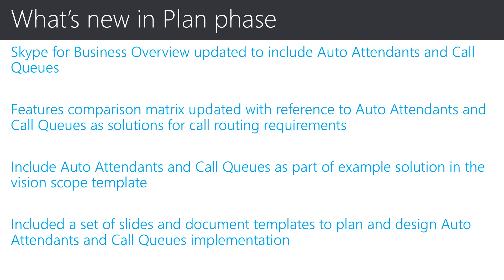If the organization you are working with requires an in-depth understanding of the capabilities, I would recommend pulling out the technical training deck and running through the content with the project team. Once it is confirmed that auto-attendance and/or call queues meet the organization's call routing requirements, you can use the configuration templates in the Detail Design workshop and document template to work through the planning for implementation of said capabilities.